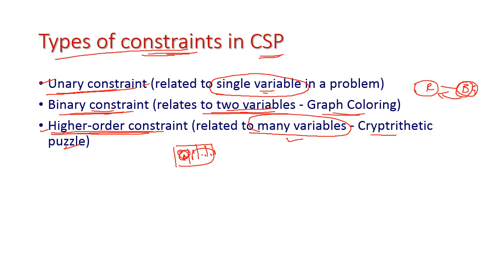So we have three different types of constraints: the first is unary constraint, the second is binary constraint, and the third is higher-order constraint. That is all about Constraint Satisfaction Problem. In the next video I will cover another important topic in artificial intelligence. Thank you all.